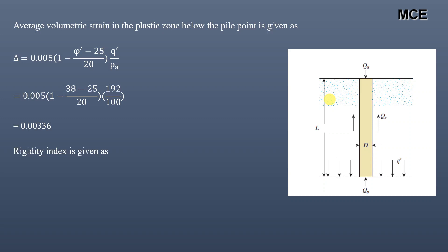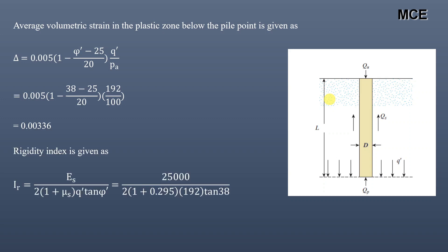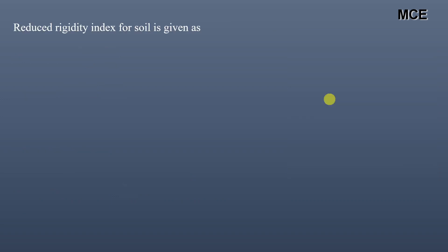The rigidity index is given as I_r = E_s / [2(1 + μ_s) × q' × tan φ']. Substituting all values, we get I_r = 64.35.